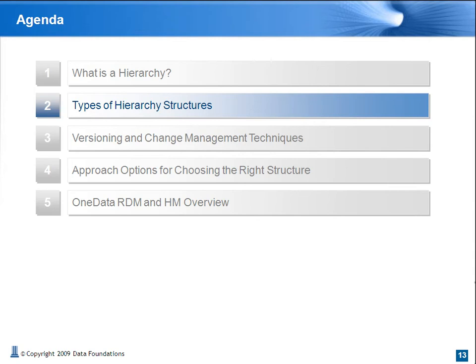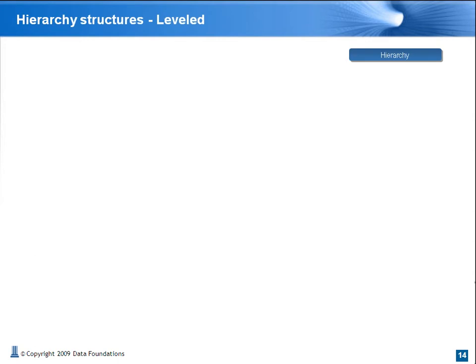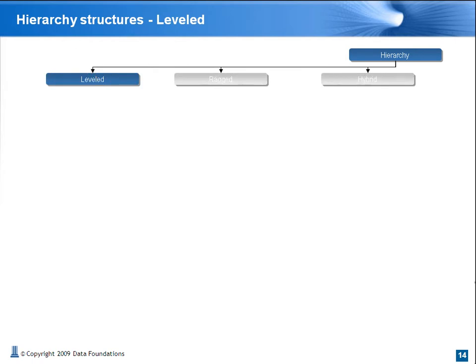Independent of the function or area, and structurally speaking, hierarchies can be classified several ways. We look at hierarchies as being three major types: leveled or structured, ragged or asymmetric, and hybrid or combination.